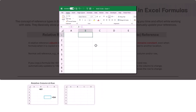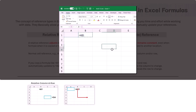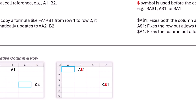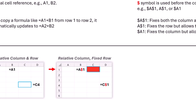Now let us enter a formula equal to A$1 in cell B2 — it will point at cell A1, but notice we have added a dollar symbol to the row reference. If we copy this formula to cell D4, the formula updates to C$1. The column reference shifts 2 columns right to column C since there is no dollar symbol on the column. However, since we added a dollar symbol to the row reference, the row stays fixed at row 1. So the new reference is C$1. Since only the column reference changed while the row remains fixed, we call this relative column and fixed row reference.